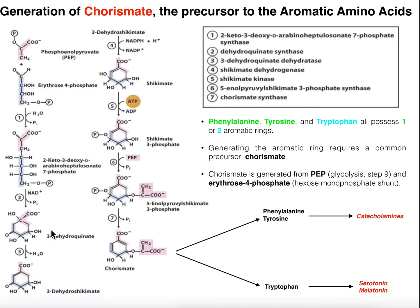The next enzyme, 3-dehydroquinate dehydratase, is going to remove a molecule of water. The water comes from the hydroxyl group on the top carbon, and between that carbon atop the ring and the one on the corner going left, you're actually going to form a double bond — essentially an elimination-type reaction. That gives you this molecule called 3-dehydrochicamate. The fourth enzyme is shikimate dehydrogenase, which converts 3-dehydrochicamate into shikimate by taking the carbonyl on the bottom corner and reducing it into a hydroxyl group, requiring electrons from NADPH.